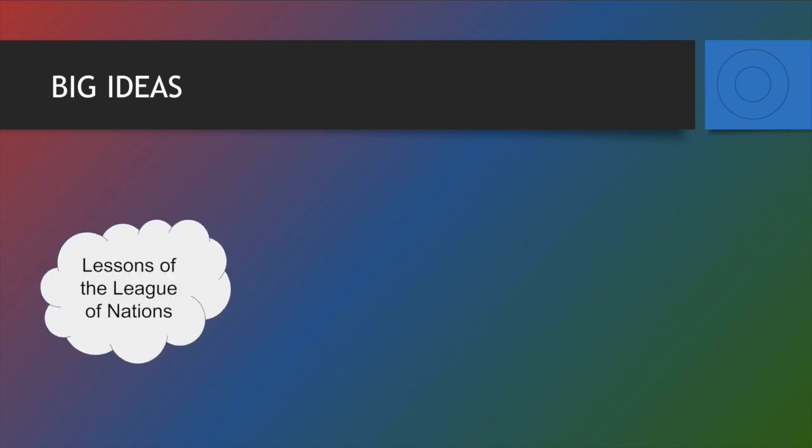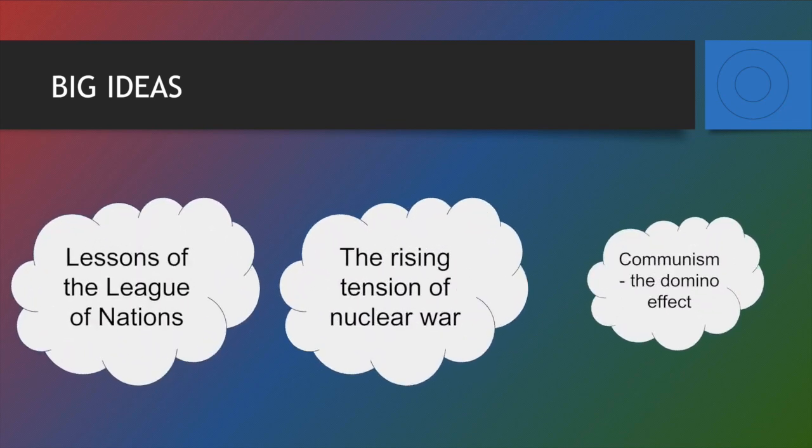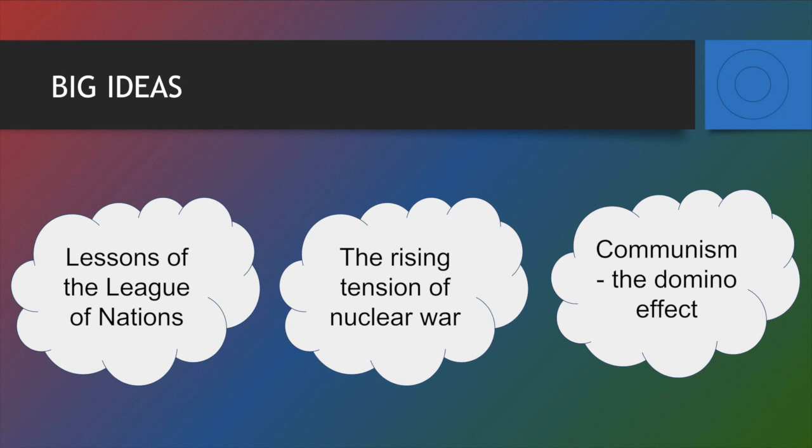One thing that is very effective when we look at these three focus points is to try to focus on the big ideas. The first big idea is that we need to understand the lessons of the League of Nations — remember back when we studied this in chapter two. Essentially, why did the League of Nations fail, and how could the leaders of the 1950s learn those lessons from the League of Nations in order to be more effective against communism?